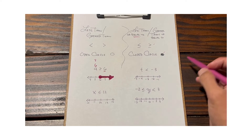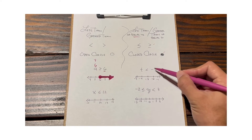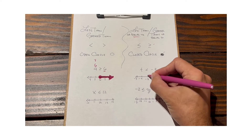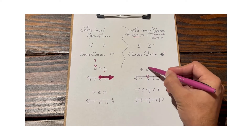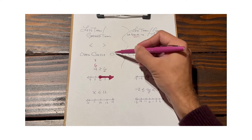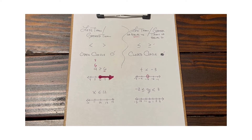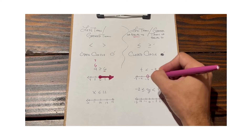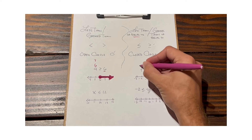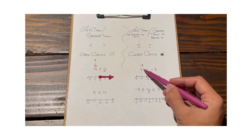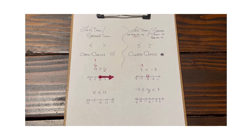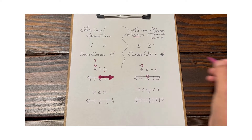Let's try another example: t < -3. Let's identify the critical value, which is negative three. I know this is just a less than sign, so it will be an open circle — we can follow that rule. But let's go ahead and try it out. Substituting the critical value for t: is negative three smaller than negative three? No, it's not. This is not a solution.